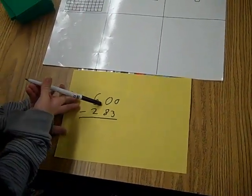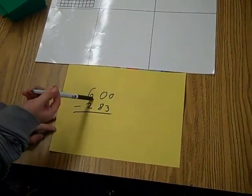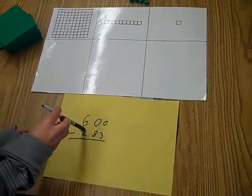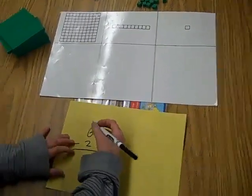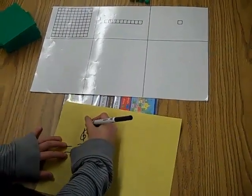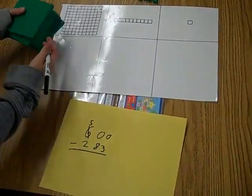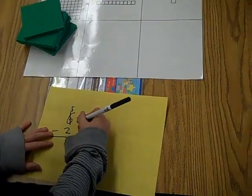You can't do that so you go to the tens and they're 0 tens. So you go to the hundreds and cross it out and make it a 5 and trade it for 10 tens.